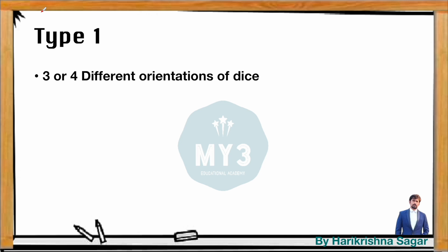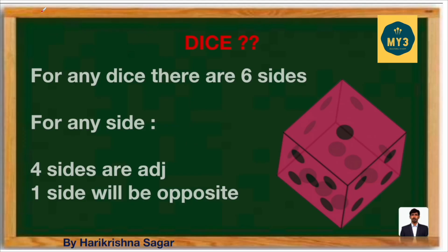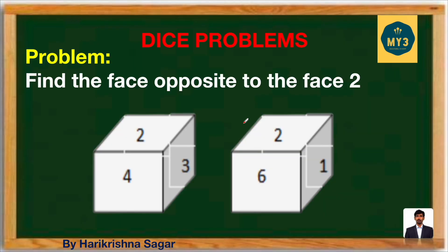Let's have a glance at Type 1 questions, which are related to three or four different orientations of a die. Before solving Type 1 questions, just observe a few details about the dice. For any die, for one particular face, there are four adjacent faces and one opposite face. Remember this point — for any die, for one particular face, there are four adjacent and one opposite. Using this point, we can comfortably solve Type 1 questions.